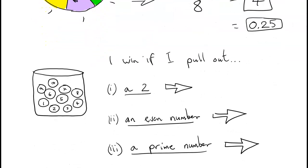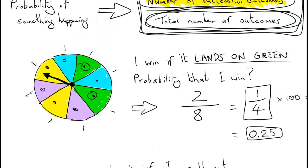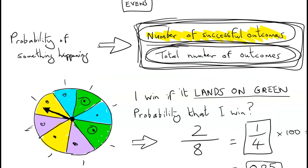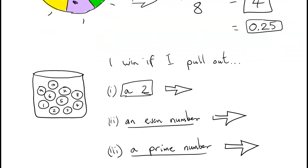Another example: if I have a bucket with numbered balls from 1 to 10, and I win if I pull out a 2 — using the method of successful outcomes divided by total outcomes, there's only one 2, so there's only one successful outcome out of a total of 10 numbered balls. So the probability is 1 over 10.